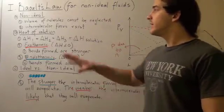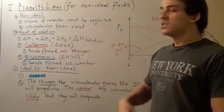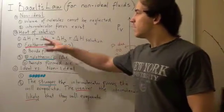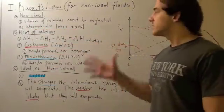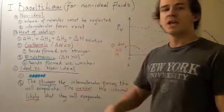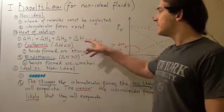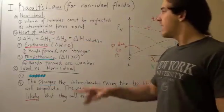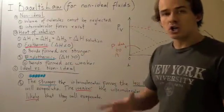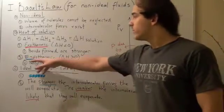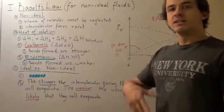Before we talk about that, let's talk about the heat of solution. We already spoke about heat of solution in another video, so let's briefly discuss it. The heat of solution is the sum of energy required to break the intermolecular forces of compound 1, plus the energy required to break the intermolecular forces of compound 2, plus the energy released when you form the new solution — that gives you the enthalpy of solution or heat of solution. When this value is negative, or exothermic, the bonds formed are stronger than the bonds broken, so they're more stable. When it's endothermic, or positive, the bonds formed are weaker and less stable than the bonds that were broken.